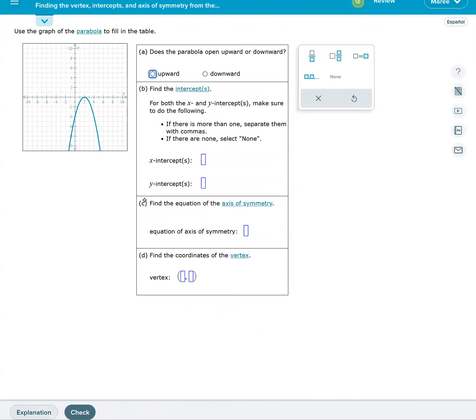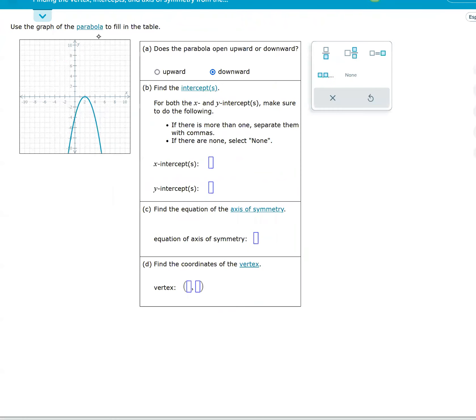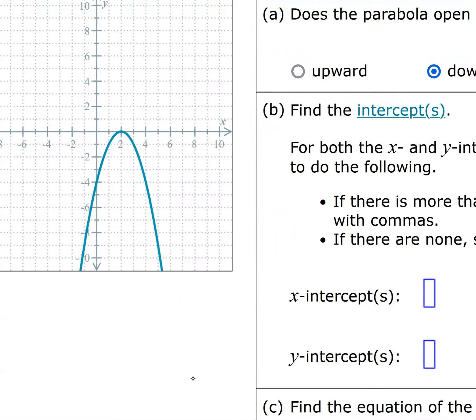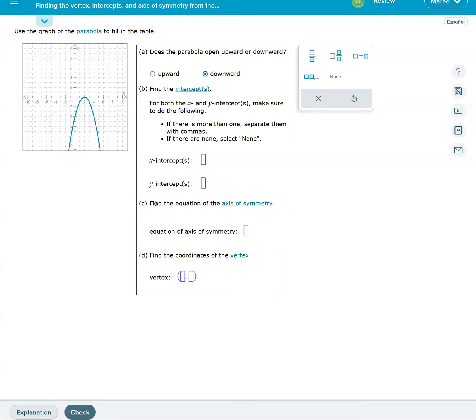Let's do another one. Does the parabola open upward or downward? It's downward. What is the x intercept? It only touches at 2, and the y intercept will be -4, so we're going to put 2 here and -4 there. The axis of symmetry is x equals 2 because that's the turning point. The coordinate of the vertex will start with a 2, and the y value is 0 because it sits right there on the x-axis.